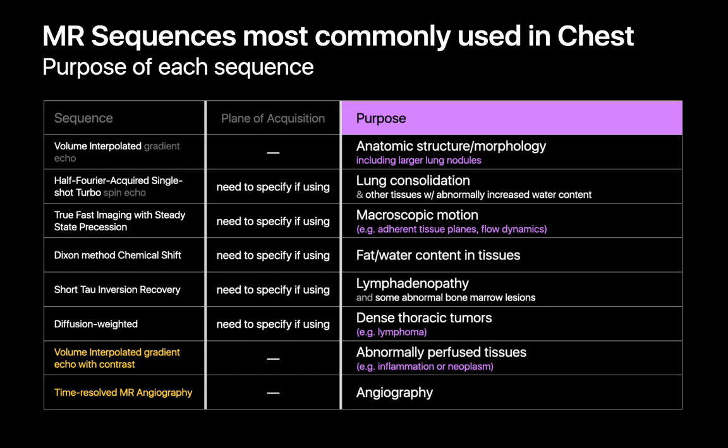Diffusion weighted imaging is good for picking up dense tumors such as lymphoma. Our contrast enhanced volume interpolated gradient echo images help us pick up abnormally hypervascular tissue, which like on CT is often indicative of inflammation or neoplasm. And our time resolved MRA sequence is a nice angiographic technique.